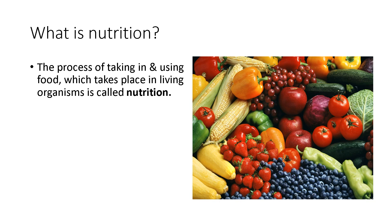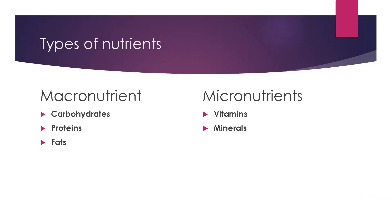Do you know what exactly is nutrition? It is the process of taking in and using food, which takes place in living organisms. On the basis of the requirement of nutrients by our body, nutrients are of two types: macronutrients and micronutrients. Macronutrients are required by our body in large quantities — examples are carbohydrates, proteins, and fats. Vitamins and minerals are required in very less quantities but are very important, so they come under micronutrients. Micro means small and macro means large.